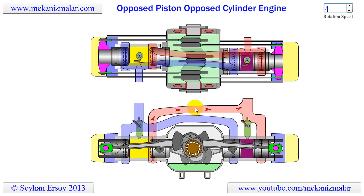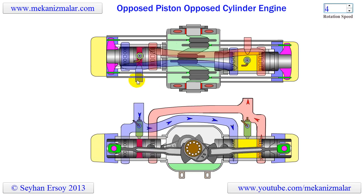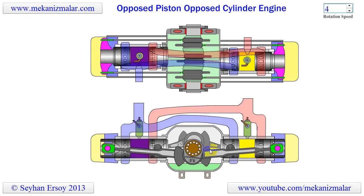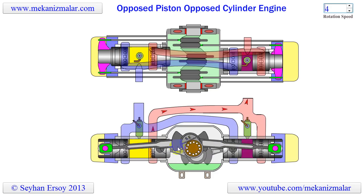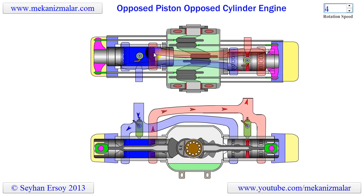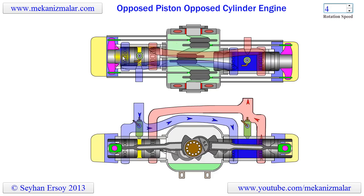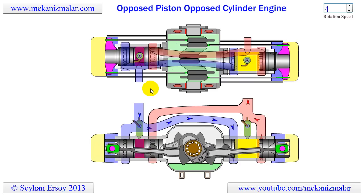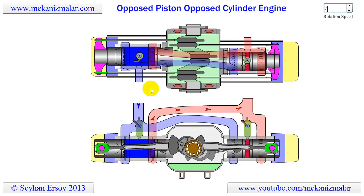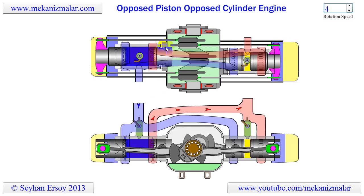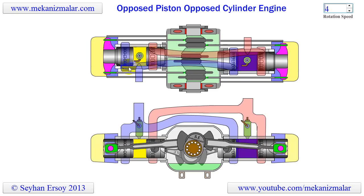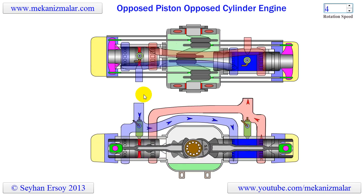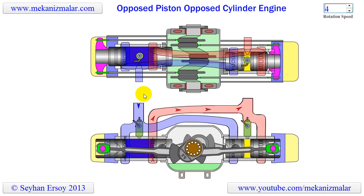The APOC engine is comprised of two opposing cylinders per module, with a crankshaft between them. Each cylinder has two pistons moving in opposite directions. This innovative design configuration eliminates the cylinder head and valve train components of conventional engines, offering an efficient, compact, and simple core engine structure.